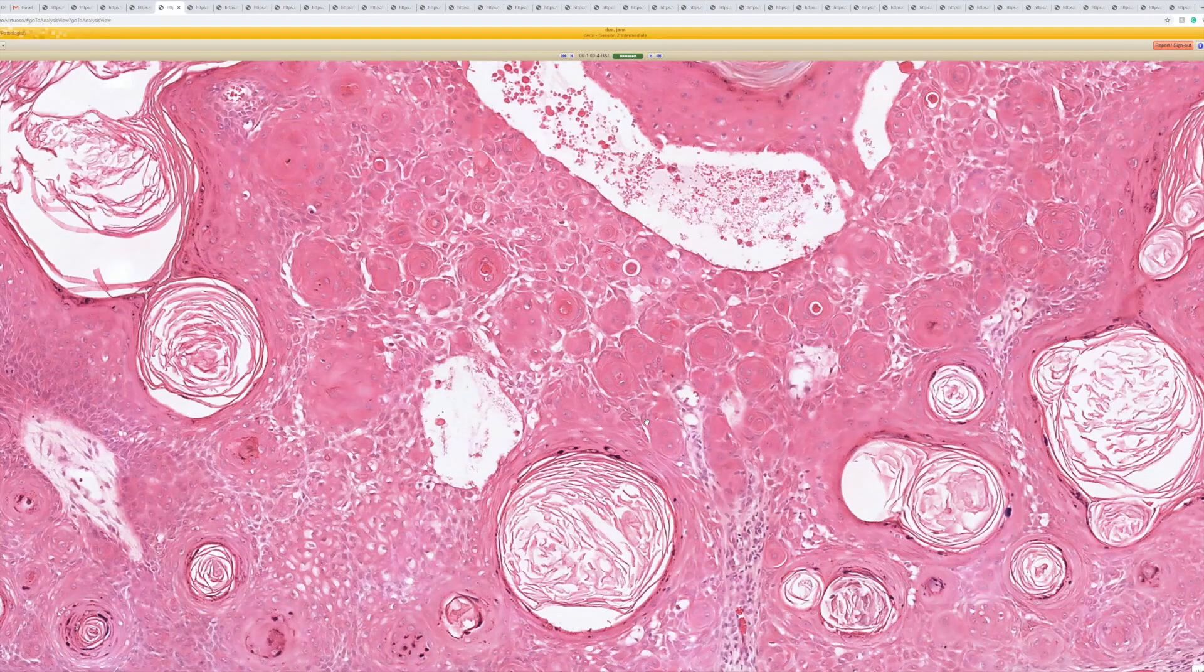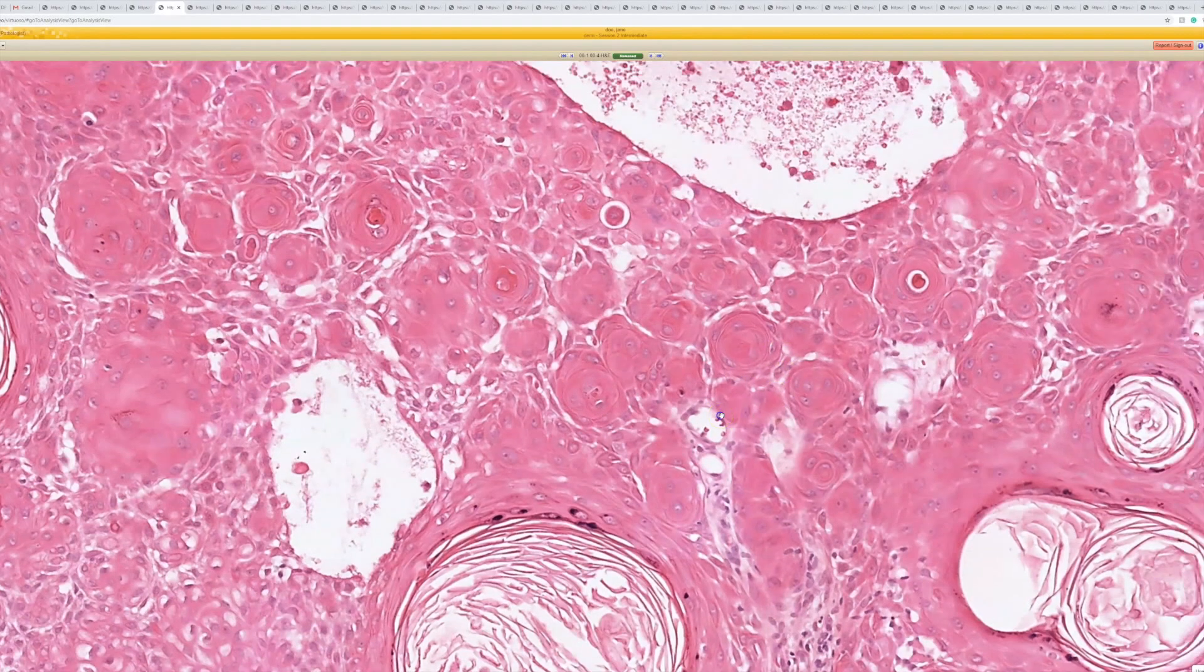Inverted follicular keratosis looks a lot like this. To me, they're probably either closely related on a spectrum with one another. It's like an irritated seb that's just grown and bulged downward into a hair follicle, then that's what an inverted follicular keratosis is. They have these same swirled, whirled squamous eddies.